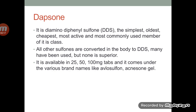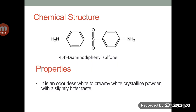First of all, we will discuss about Dapsone. Dapsone is also called as diamine or diphenyl sulfone and it is the simplest, oldest, cheapest and most active, commonly used member of this class, that is sulfones. All the sulfones in our body are converted to DDS but none of them is superior to Dapsone. It is available in 25, 50, 100 mg tablets and it also comes under various brand names like avlosulfone and igenisone gel.